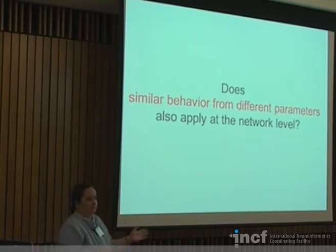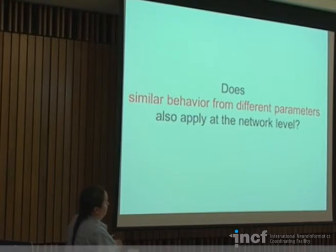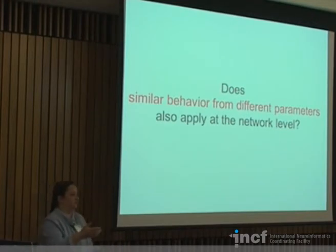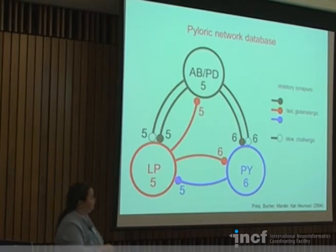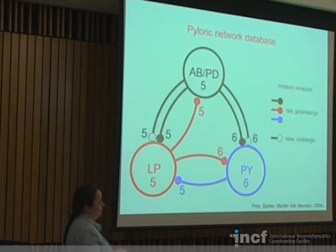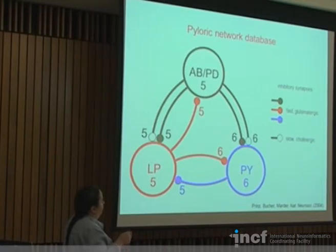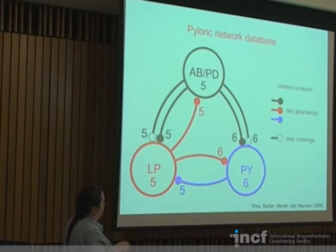This was all single cell level so far. The question becomes: does this message of similar behavior from different parameters also apply at the network level? The same exercise is performed, constructing a model network database by brute force exploration but at the network level. This is your three-node network again — a ten-dimensional parameter space. Three cells will be placed into the different circuit positions, and there are seven synapses in the circuit, all inhibitory.